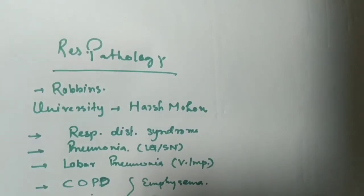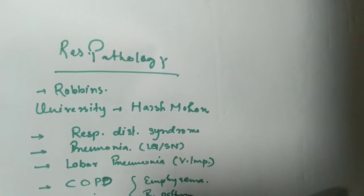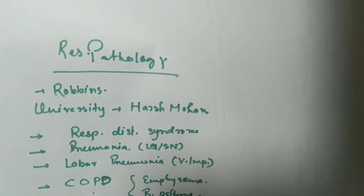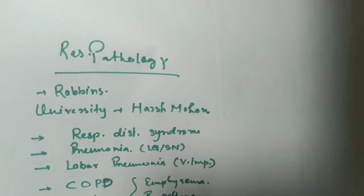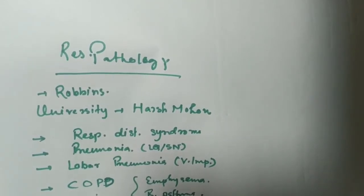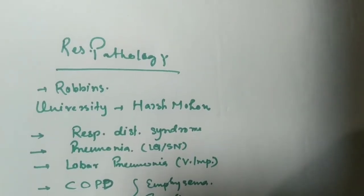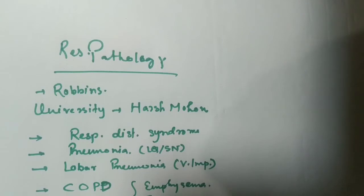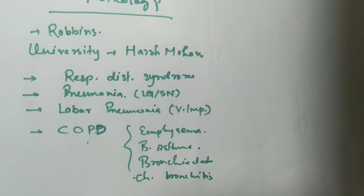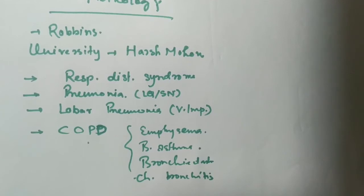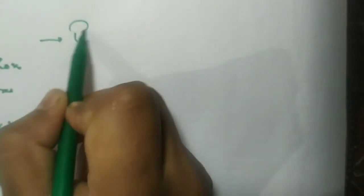Another very important topic is Bronchiectasis — it can appear as a short note. Chronic Bronchitis is also asked as a short note or long question. COPD is also important; when writing about COPD, you should include Chronic Bronchitis as well. Short notes and long questions both apply.